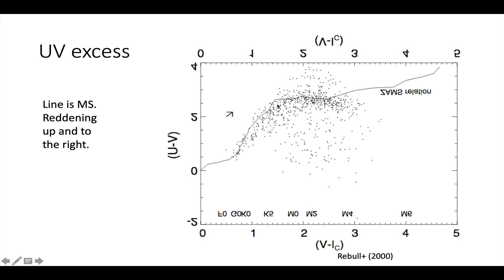The reddening vector goes up and to the right because it's going to be pushing it red in both directions. The solid line is where the main sequence lives, right? You end up with a clump of stars scattering around that line because those are the main sequence stars. All the things that are bluer than you expect are the ones that are UV excess stars. In other words, the ones that are actively accreting. So what are these guys up here? They're stars from here that have been pushed up here because they're reddened.